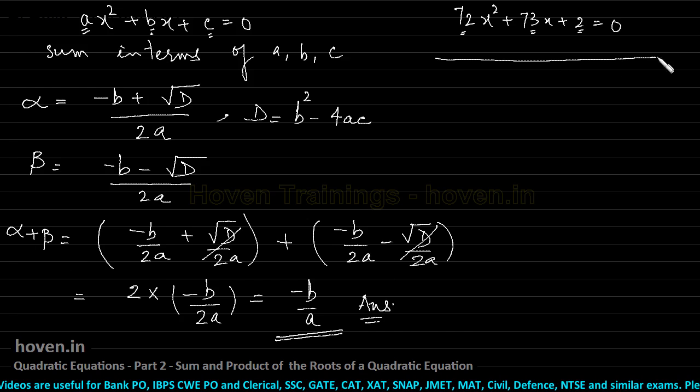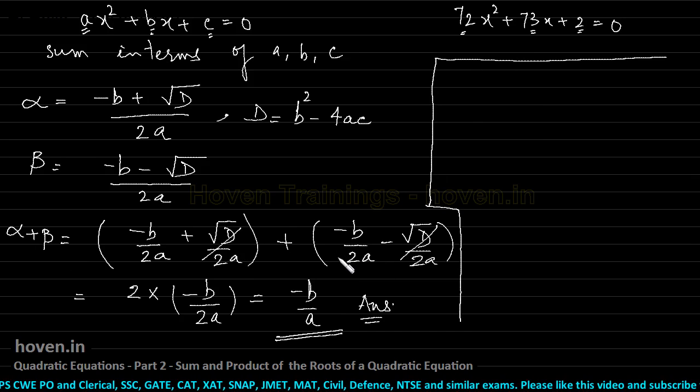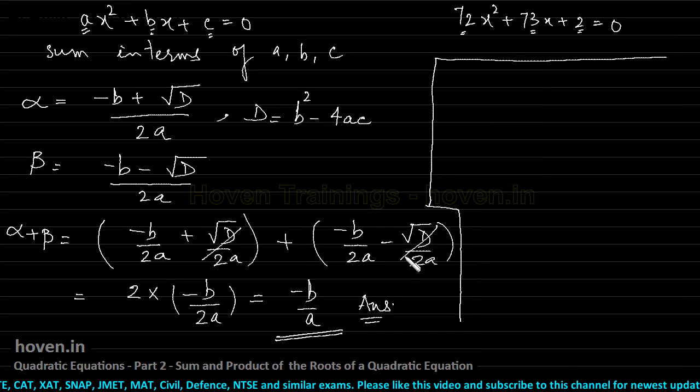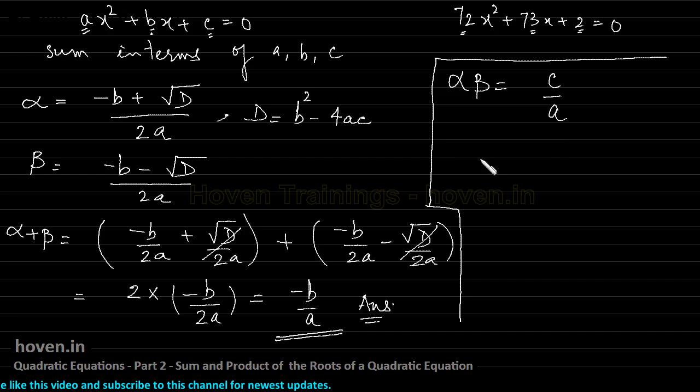Similarly, it is possible to multiply these two roots and then use that formula a plus b into a minus b and use that all calculation. So finally, you do arrive at this result that the product of the roots is given by a simpler formula called c by a. So I'll summarize sum of roots.